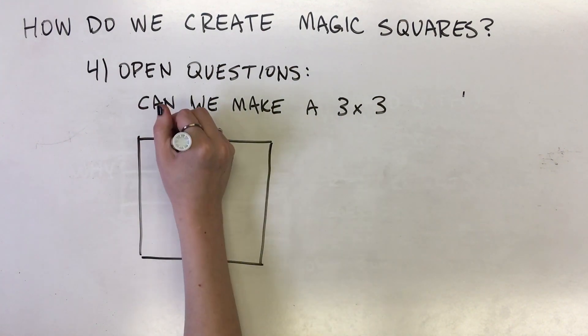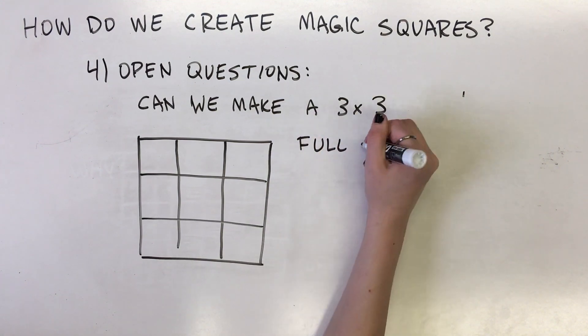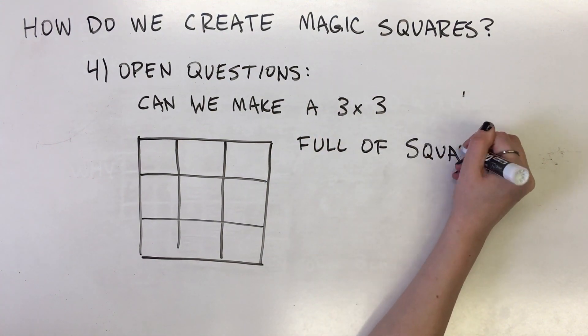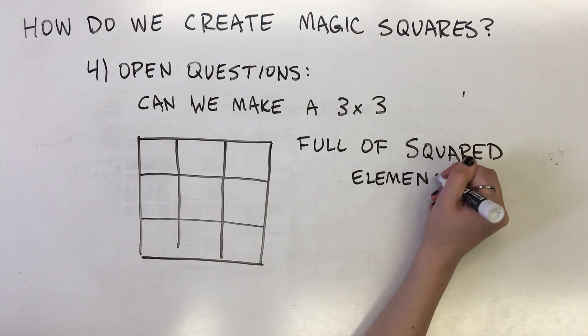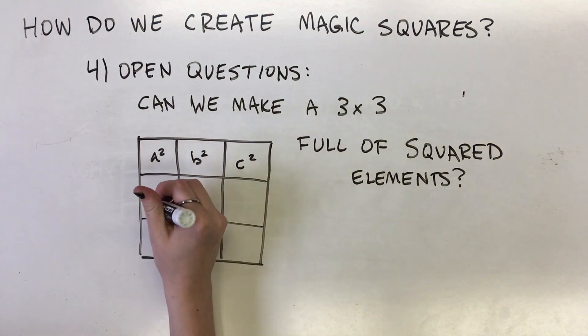Originally proposed by Martin Labar, the problem became famous when Martin Gardner offered $100 to the first person to solve the problem. The prize has since been raised to 1,000 euros plus a bottle of champagne.